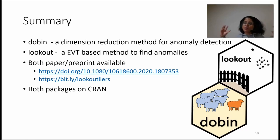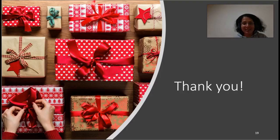In summary, I've talked about two things. One is Dobbin. This is a preprocessing step specially catered for outlier detection. It's a dimension reduction method. Then Lookout is an extreme value theory based method to find anomalies. Both paper and preprint are available and both packages are on CRAN. Thank you very much for listening.